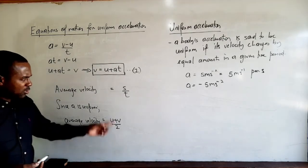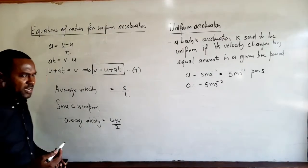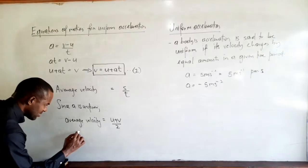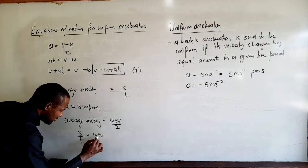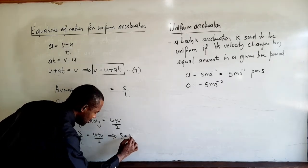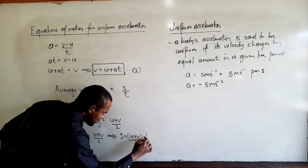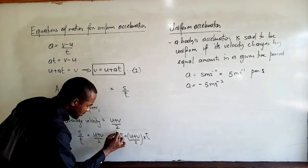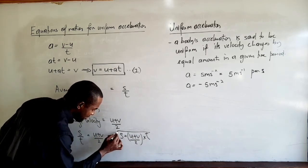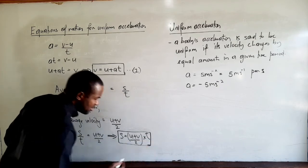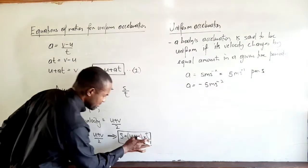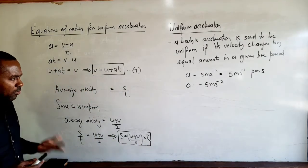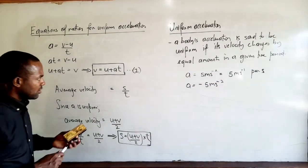Equating these two expressions, s over t equals u plus v over 2, so s equals u plus v over 2 times t. This is our second equation of motion. Note that textbooks may list these equations in different orders — the important thing is deriving all equations of motion for uniform acceleration.